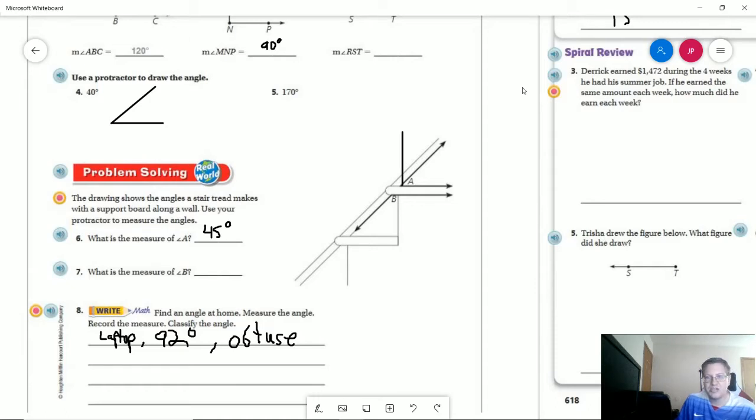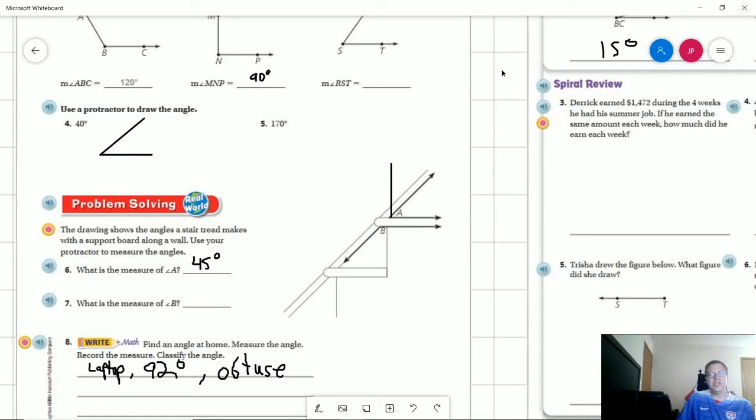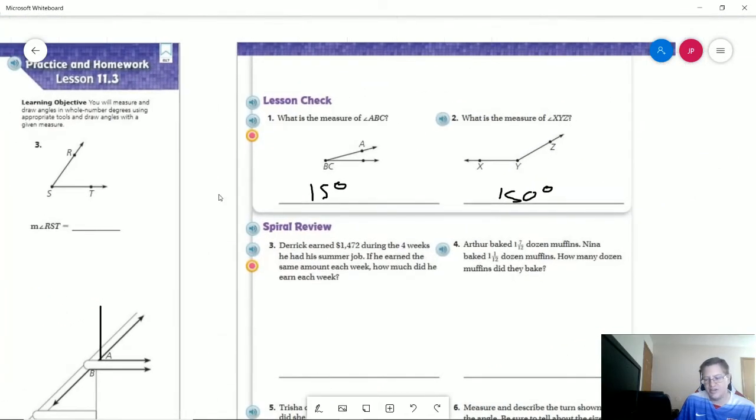So if you have a measurement like this one, where you're measuring the stairs, it's 45 degrees or whatever you came up with for that. Less than 90 degrees, we would have an acute angle. Right angle would be exactly 90 degrees and a straight angle would be zero or 180 degrees. And I mentioned the surface of my computer desk would be at a measurement of either zero or 180.